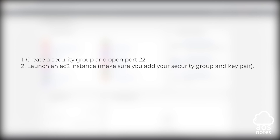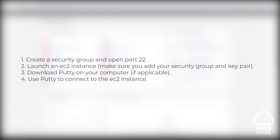First, we are going to create a security group and open port 22. Then we are going to launch our EC2 instance in a subnet in the default VPC, and we will make sure we add our security group and a key pair. Once we have launched our EC2 instance, we are going to download PuTTY on our computer. Then once you've downloaded PuTTY, we'll use it to connect to our EC2 instance.